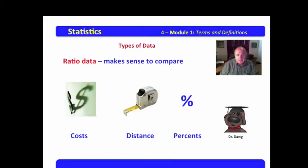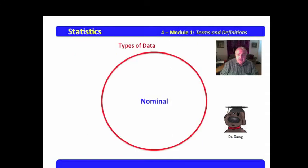Now, ratio data makes sense to compare. Ratio data includes such things as cost, distance, percent. One dollar is half of two dollars. If we paid $400 for tuition for a class, that's half of paying $800 for tuition, and $800 is half of paying $1,600. Makes sense to compare. One foot is half the distance of two feet. 50% is half of 100%. I hope that makes some sense to you.